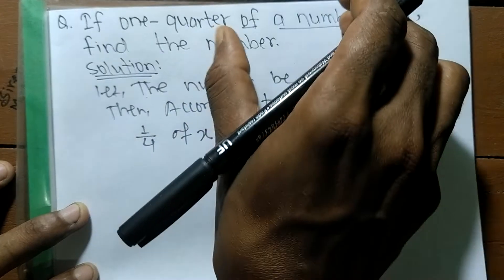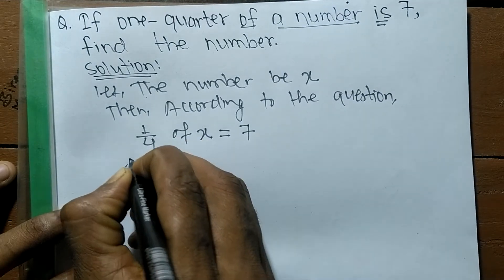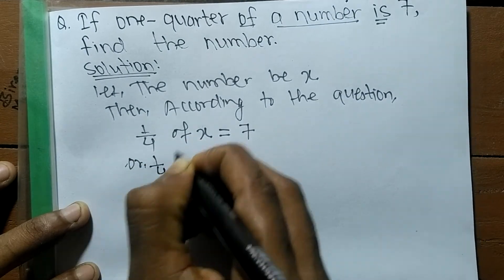So this is the mathematical equation of this word equation. Now we have to solve this equation. So 1/4 of means multiply, X is equal to 7.